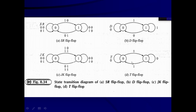For the T flip-flop: T=0 is no-change — previous 0 stays 0, previous 1 stays 1, so arrows loop back to the same state. T=1 is toggle mode — Qn+1=Q̄n, so 0 transitions to 1 and 1 transitions to 0 by applying T=1. This way the state transition diagrams for SR, D, JK, and T flip-flops can be obtained.